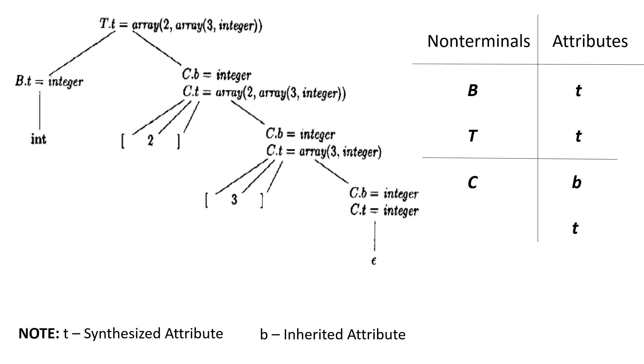The inherited b attribute passes a basic type down to C and the synthesized t attribute accumulates the result. An annotated parse tree for the input string int 2 by 3 is shown below. The corresponding type expression is constructed by passing the tree integer from B down the chain of C's through the inherited attributes b. The array type is synthesized out of the chain of C's through the attributes t.